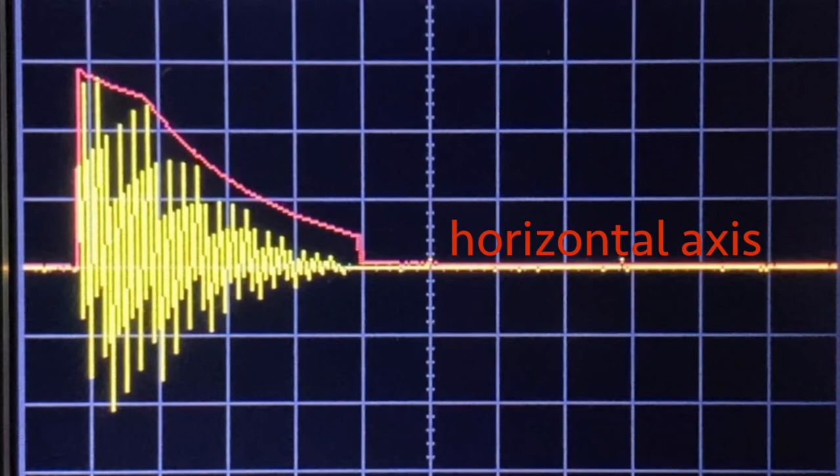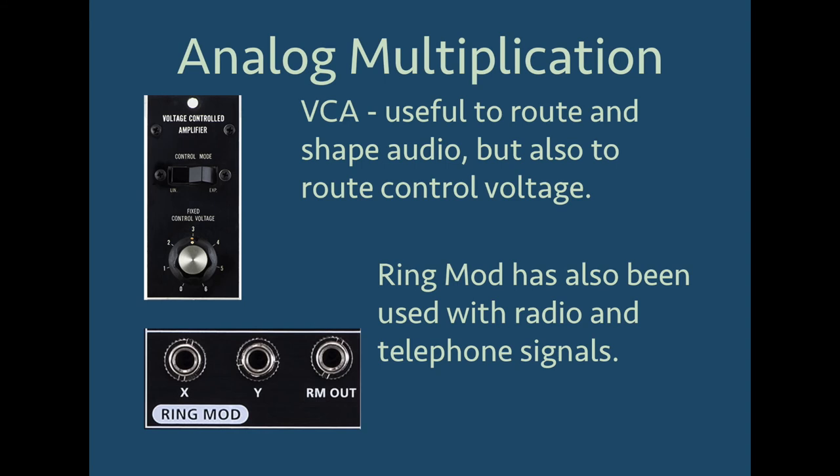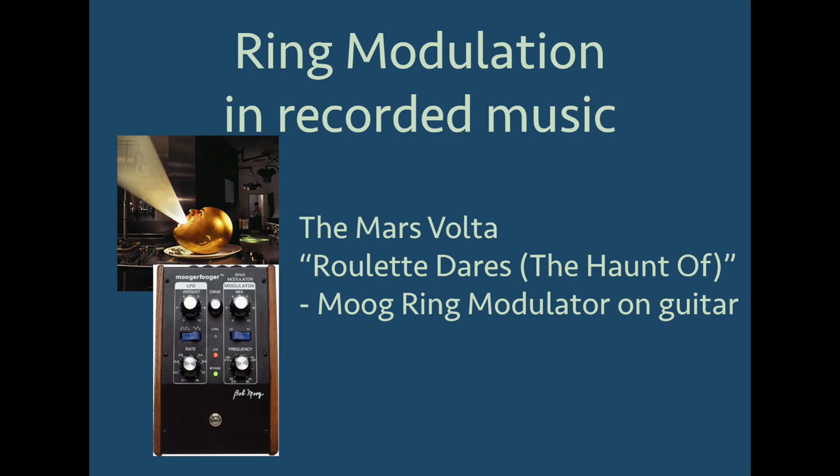The VCA is an important part of a synthesizer to shape the loudness of a sound, and therefore multiplication is a very important operation used in synthesis. But multiplication is also important with ring modulation, which is used in radio receivers and was used in early telephone systems. Ring modulation is also a great way to create odd sounds, as heard in this example.